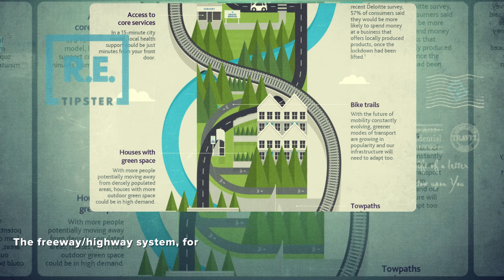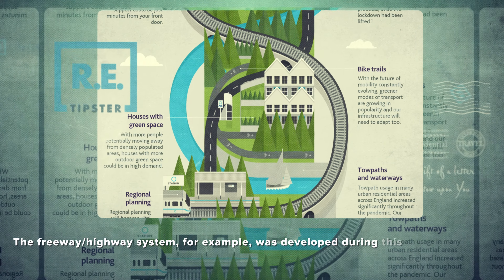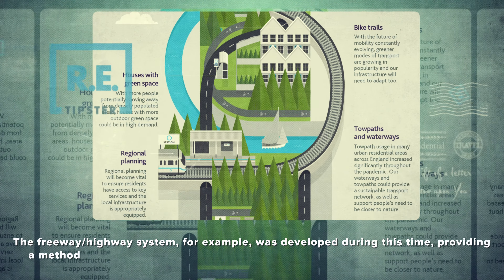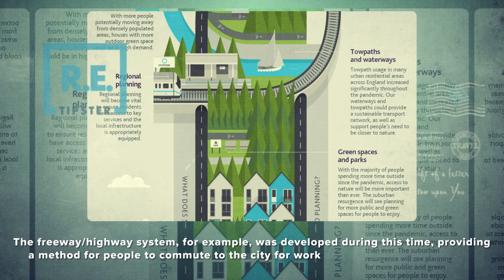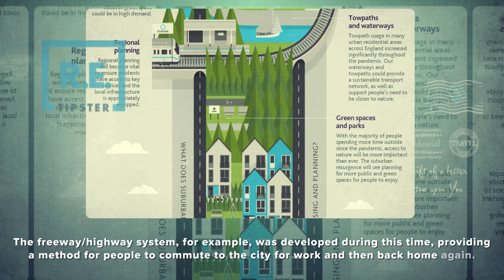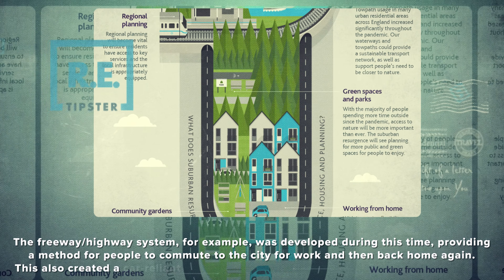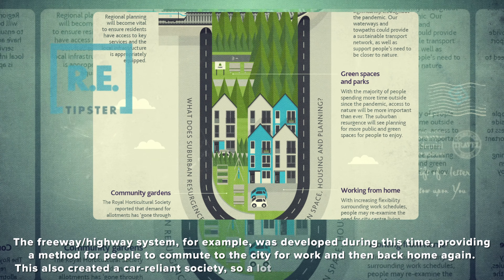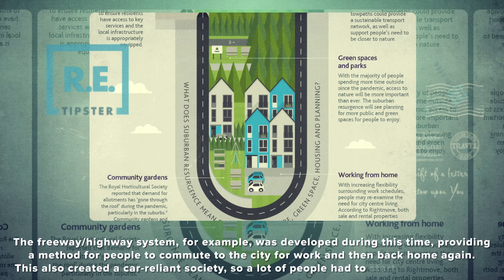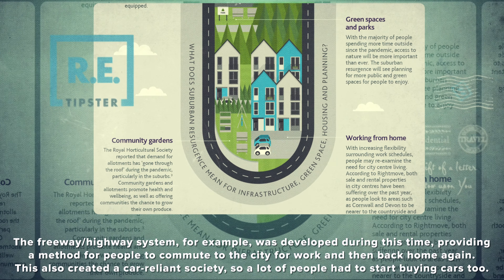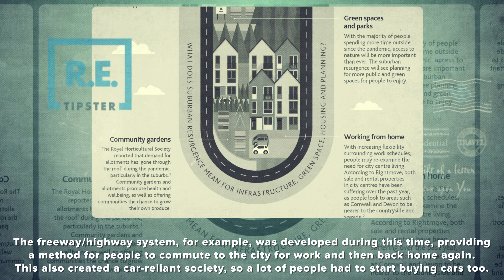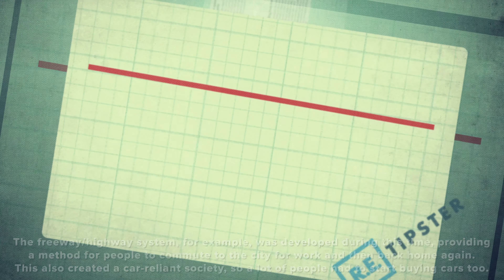The freeway and highway system was developed during this time, providing a method for people to commute to the city for work and then back home again. This also created a car-reliant society, so a lot of people had to start buying cars too.